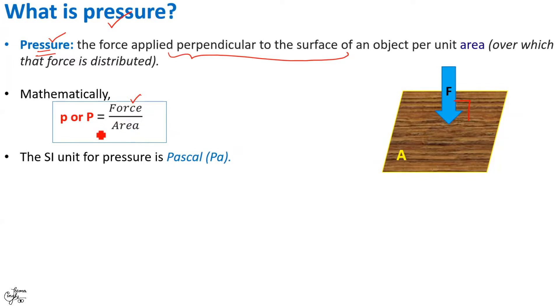Now, pressure can be denoted by small p as well as capital P. However, capital P is more commonly or widely used. As depicted by this formula, pressure is directly proportional to force and inversely proportional to area, which means we can create a large amount of pressure by either exerting a large force or by exerting a force over a small area or do both, exert large force over a small area.